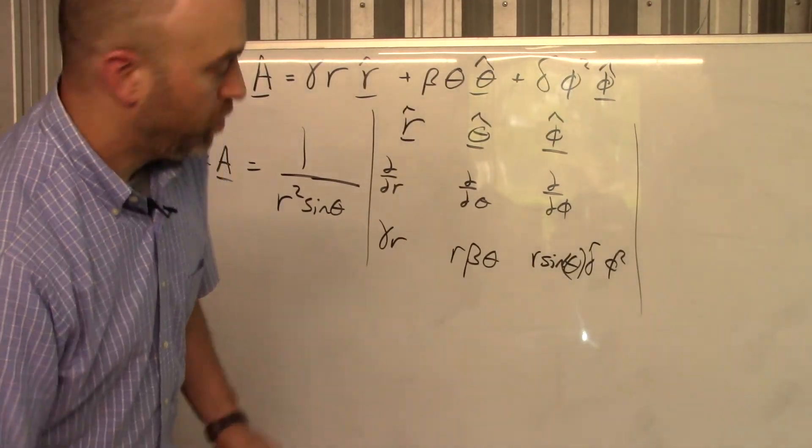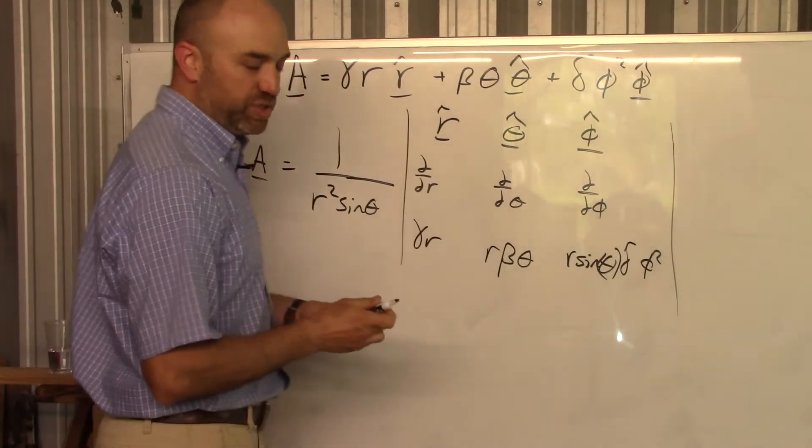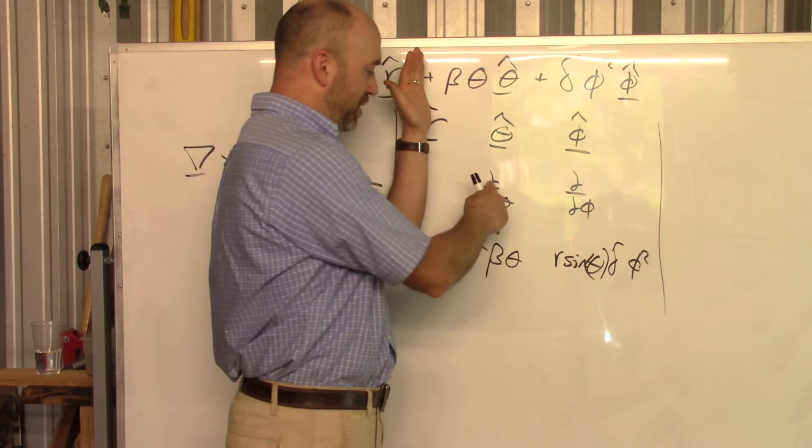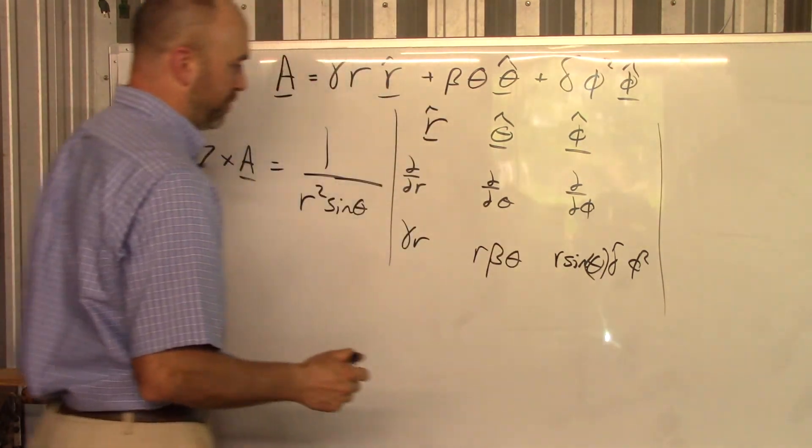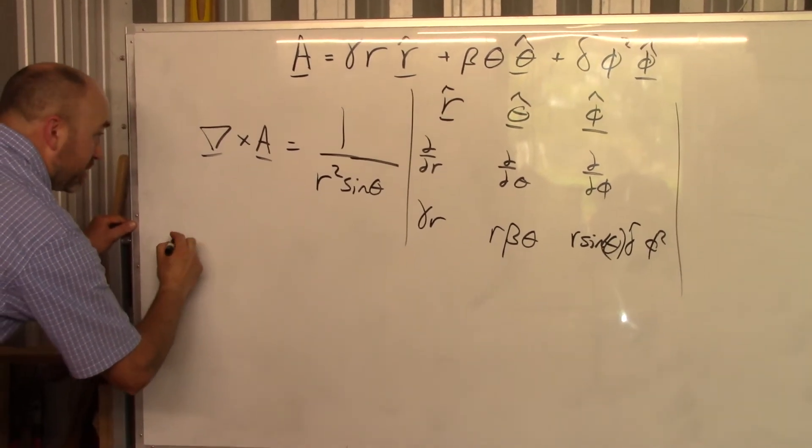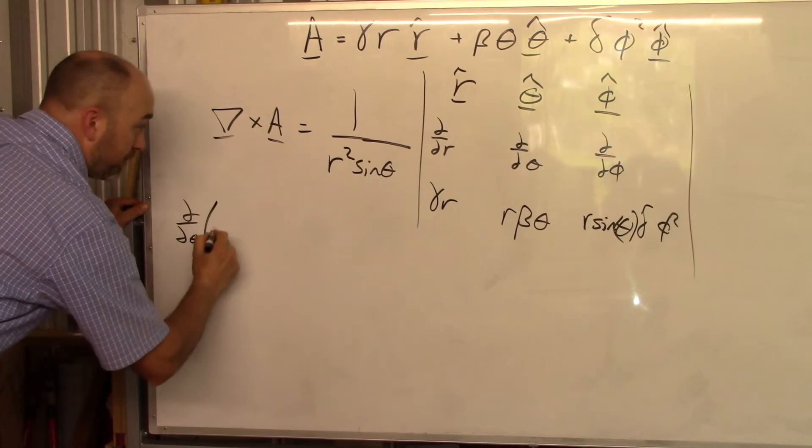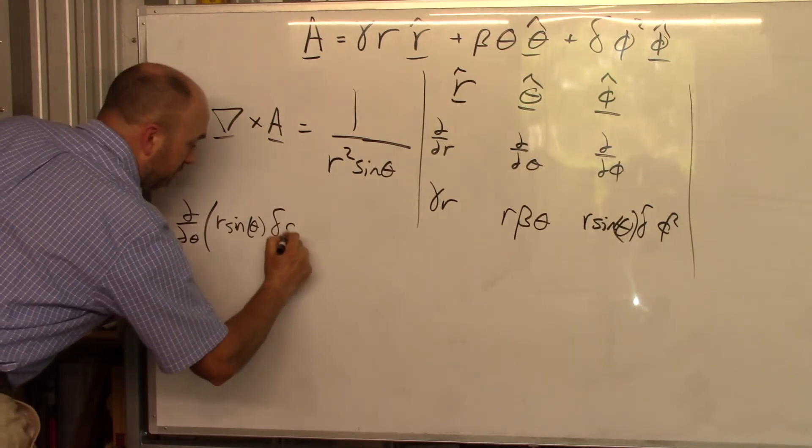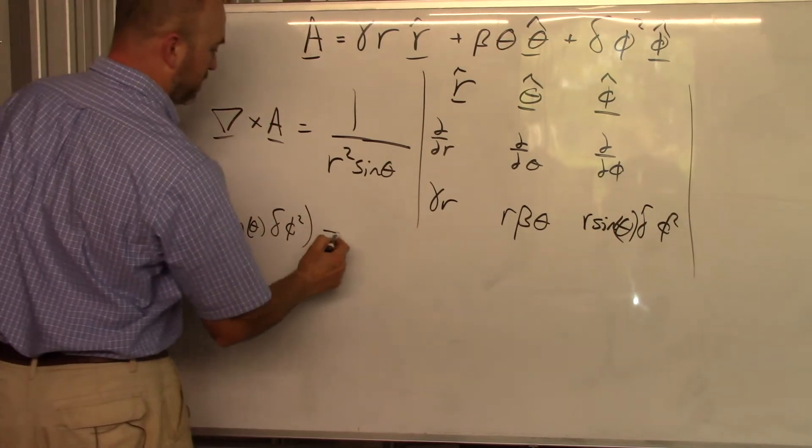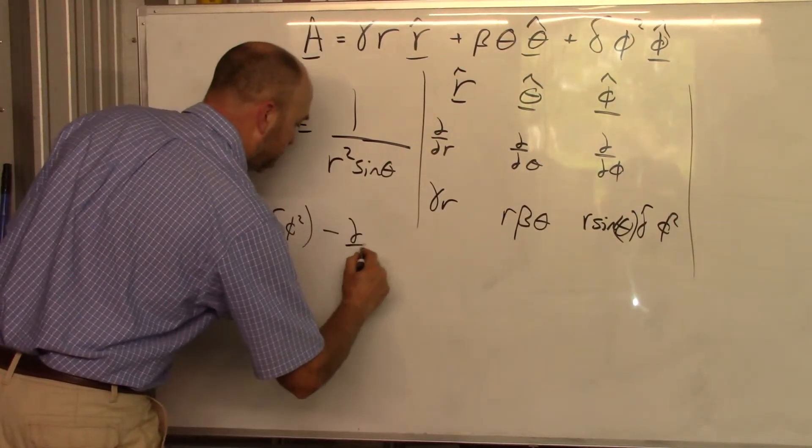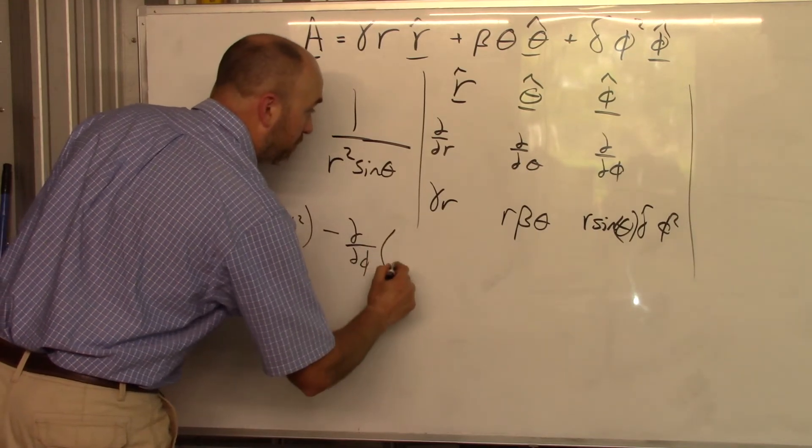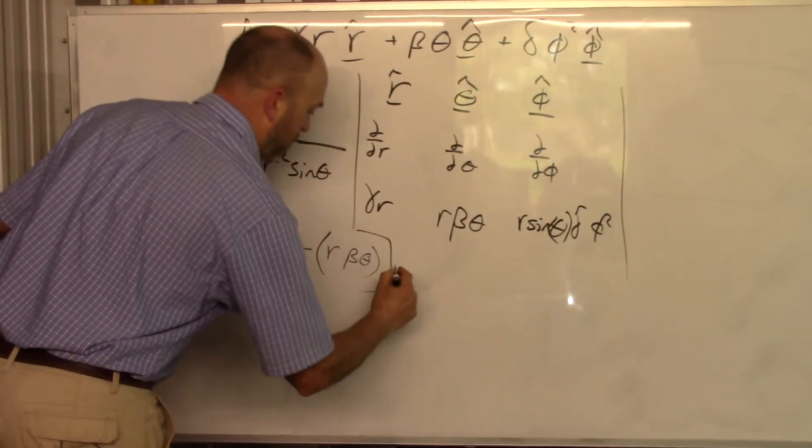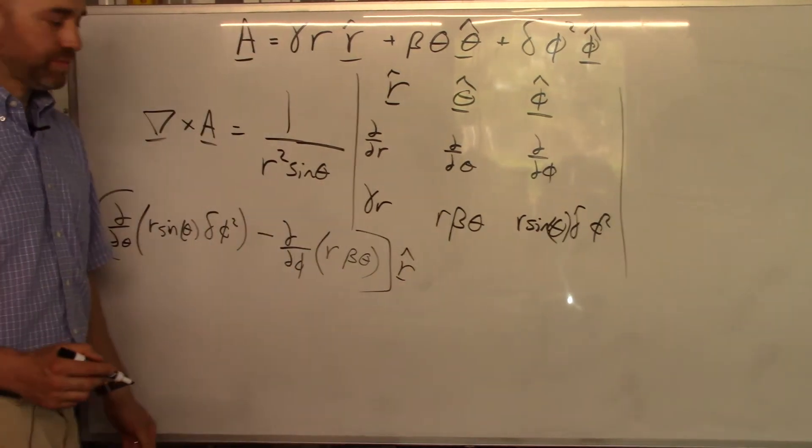Okay, so when we work this out, what we're going to do here is just determinant like you've always been doing since you were in kindergarten, because I know you did determinant in kindergarten, right? So you're going to have to cover this up and do this times this minus this times this. Okay, so it's going to be d by d theta of r sine theta times delta phi squared minus this times this. So it's going to be d by d phi of r beta theta. All that times r-hat. That's your first piece.